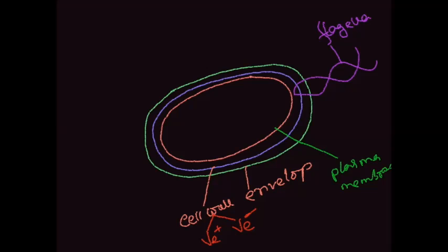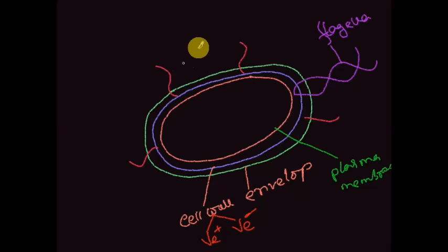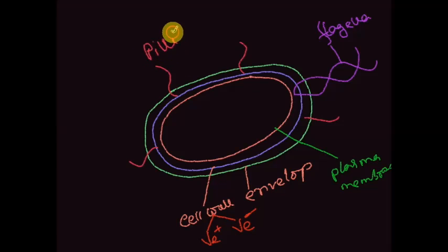Another very small type of structure, similar to bacterial flagella, is called fimbriae or also pili. Its function is to transfer genetic materials from one species to another.